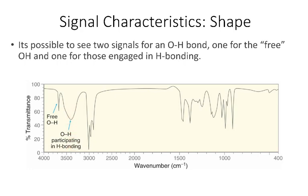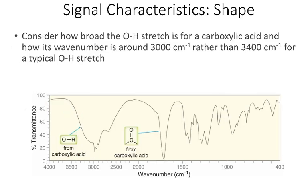Carboxylic acids are particularly easy to spot. They participate in hydrogen bonding extensively and tend to have super broad peaks centered around 3,000 wave numbers. Whenever we see really broad peaks, that's characteristic of an O–H stretch from a carboxylic acid. We can also identify carboxylic acids because they'll also have a peak due to the carbon–oxygen double bond in the double bond region of the diagnostic region of the spectrum.